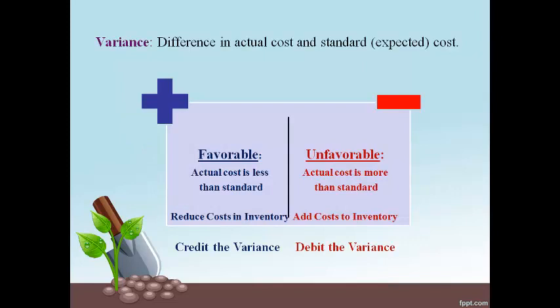The variances recorded in the accounting records are either favorable or unfavorable. A favorable variance occurs when the actual cost is less than the estimated cost. The standard cost method records cost to work in process at the estimated amount, and inventory must then be adjusted to the actual cost. An unfavorable variance occurs when the actual cost is more than the estimated cost. The standard cost method records amounts at the standard cost, and more cost must be added to get cost equal to the actual amount.